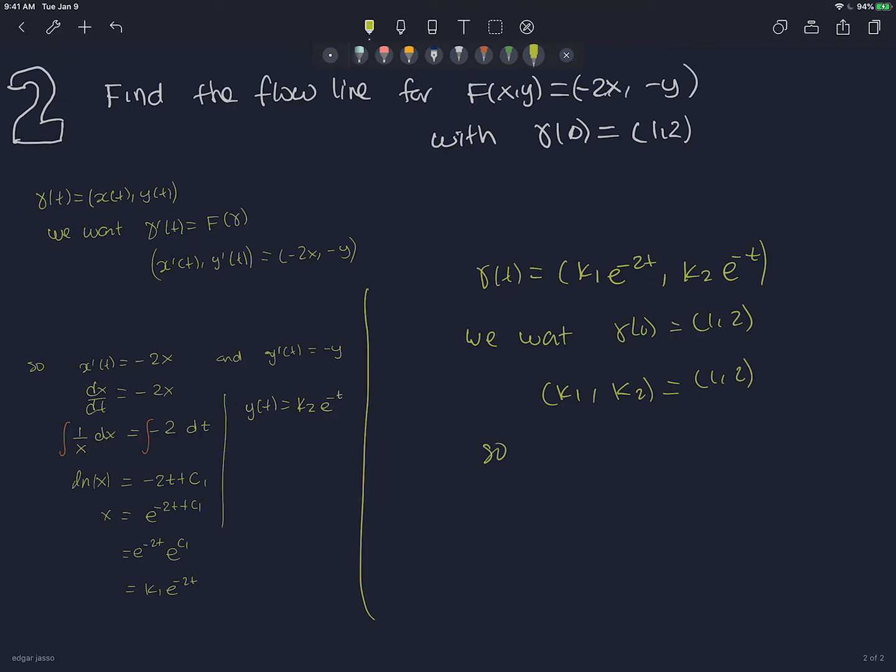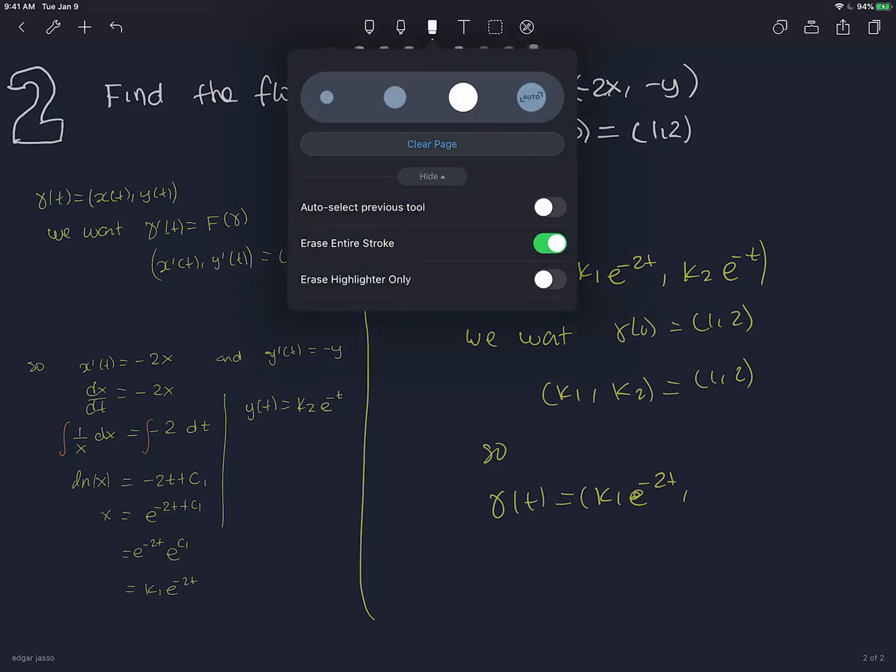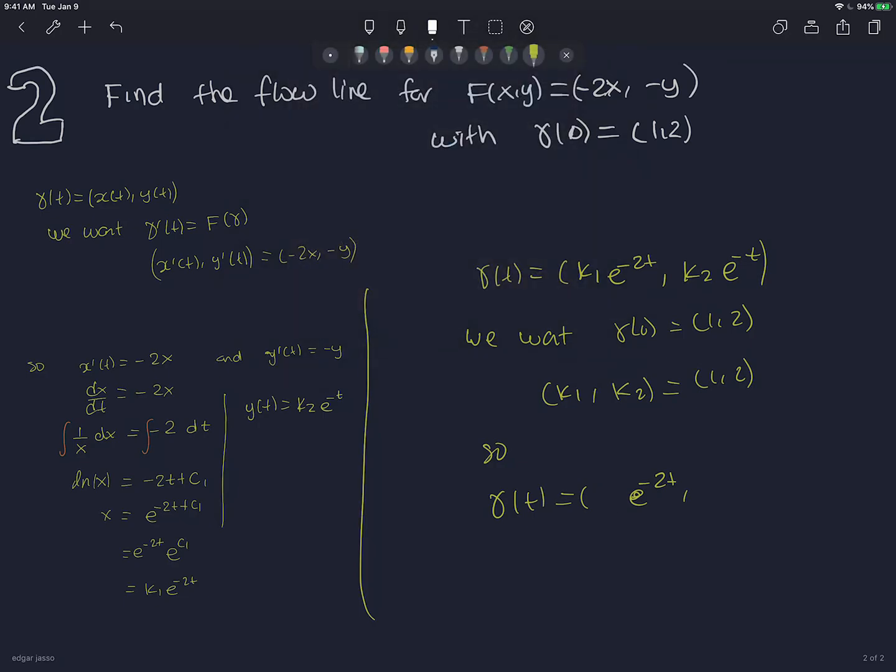So we get that my curve I was looking for is (e^(-2t), 2e^(-t)). This would be finding a simple integral curve or flow line.